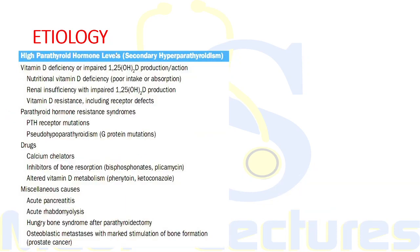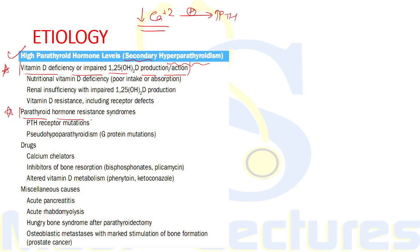Now we discuss conditions associated with high PTH levels. If calcium decreases due to any cause other than hypoparathyroidism, feedback stimulation of PTH occurs — this is secondary hyperparathyroidism. Causes include vitamin D deficiency, impaired 1,25-dihydroxyvitamin D production or action, PTH resistance (so the parathyroid gland further increases synthesis and release), certain drugs, and miscellaneous causes.